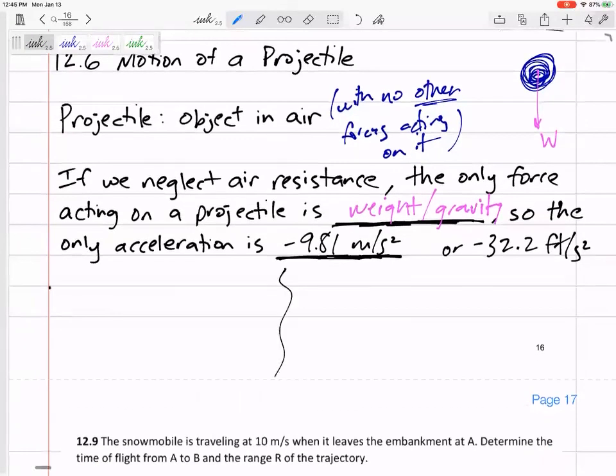So how do I like to do these? I like to separate this. I'm going to have an X problem, and I'm going to have a Y problem. My X problem, so I'm going to think about the X velocity, the X position, the X acceleration. We are going to assume that the only acceleration is negative 9.81, and that's not in the X. It's in the Y.